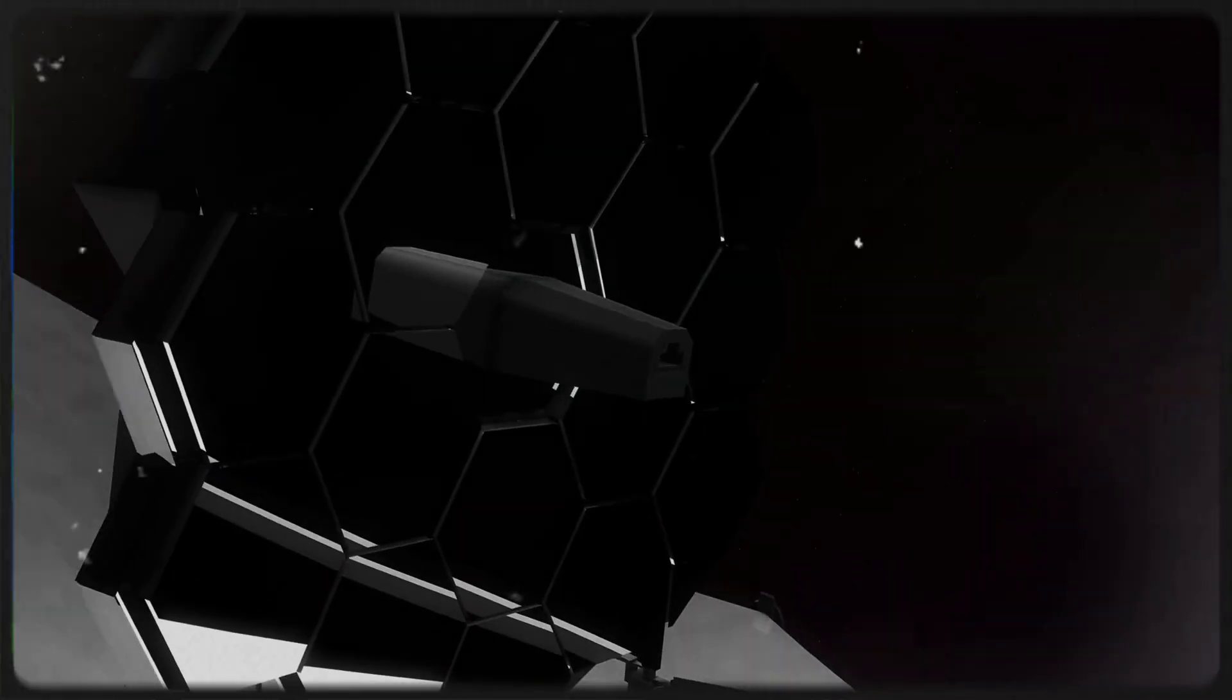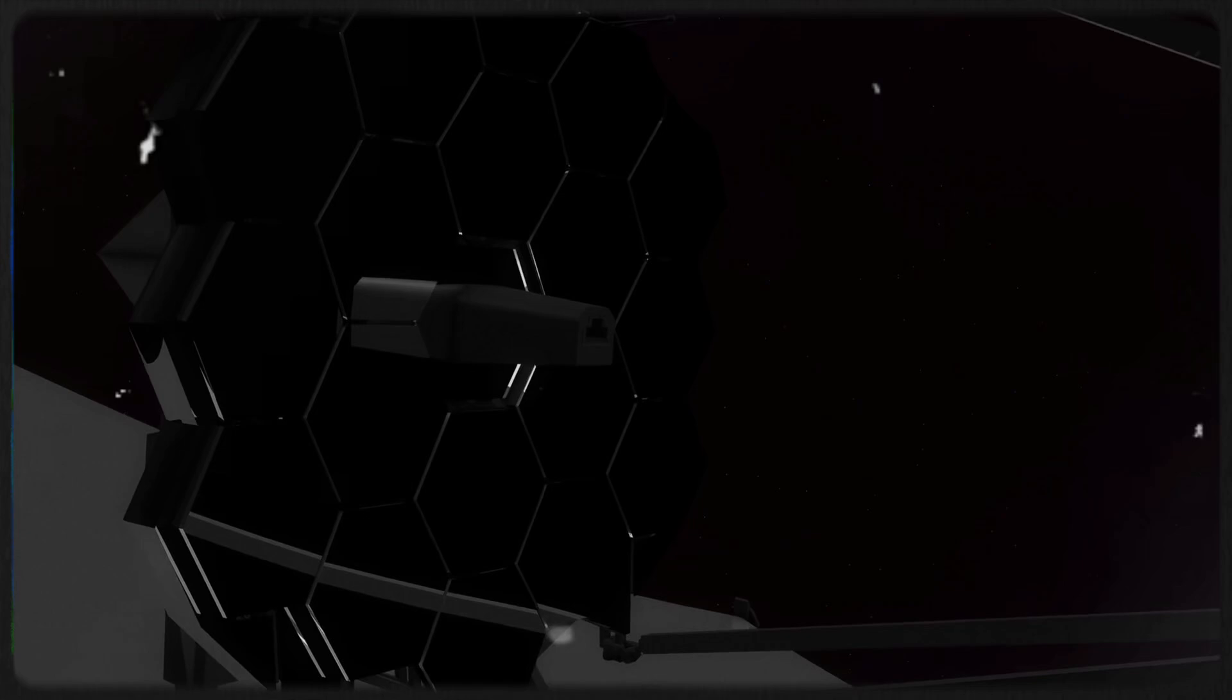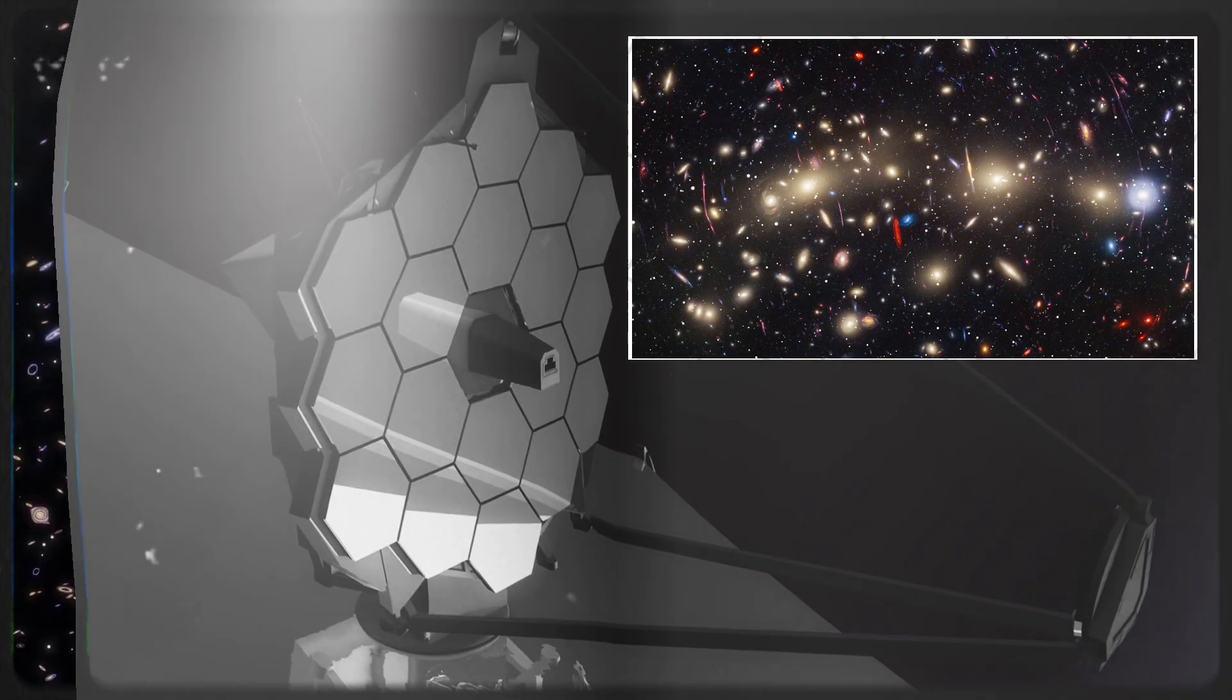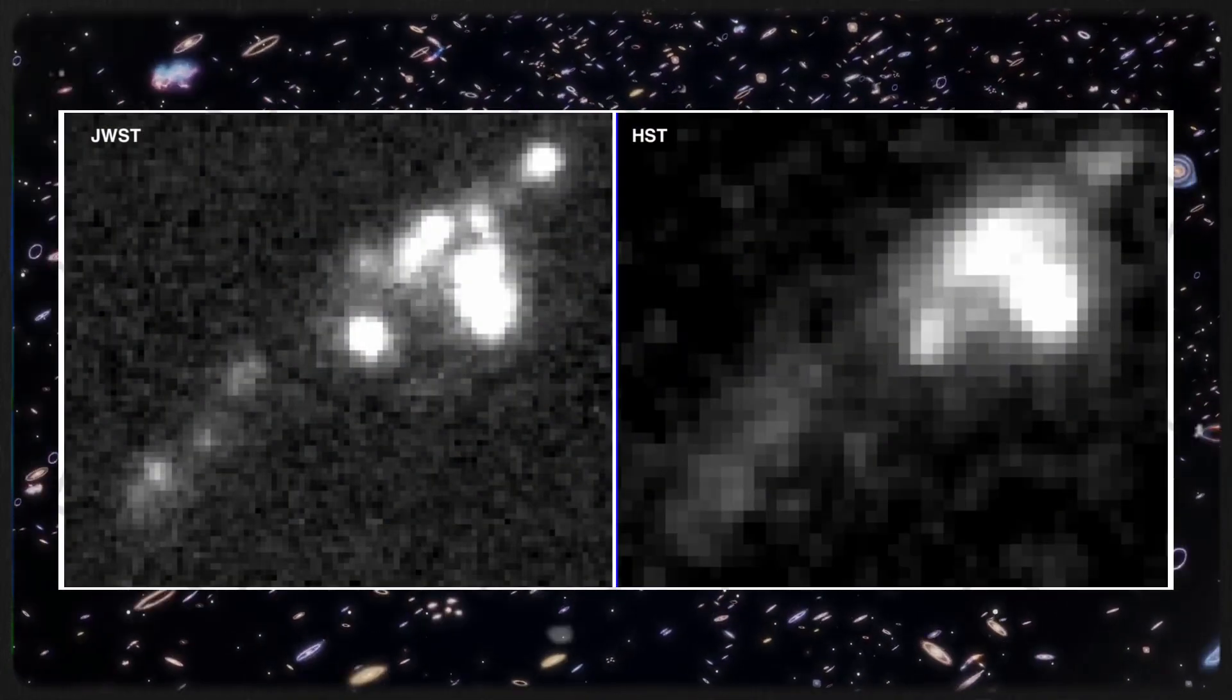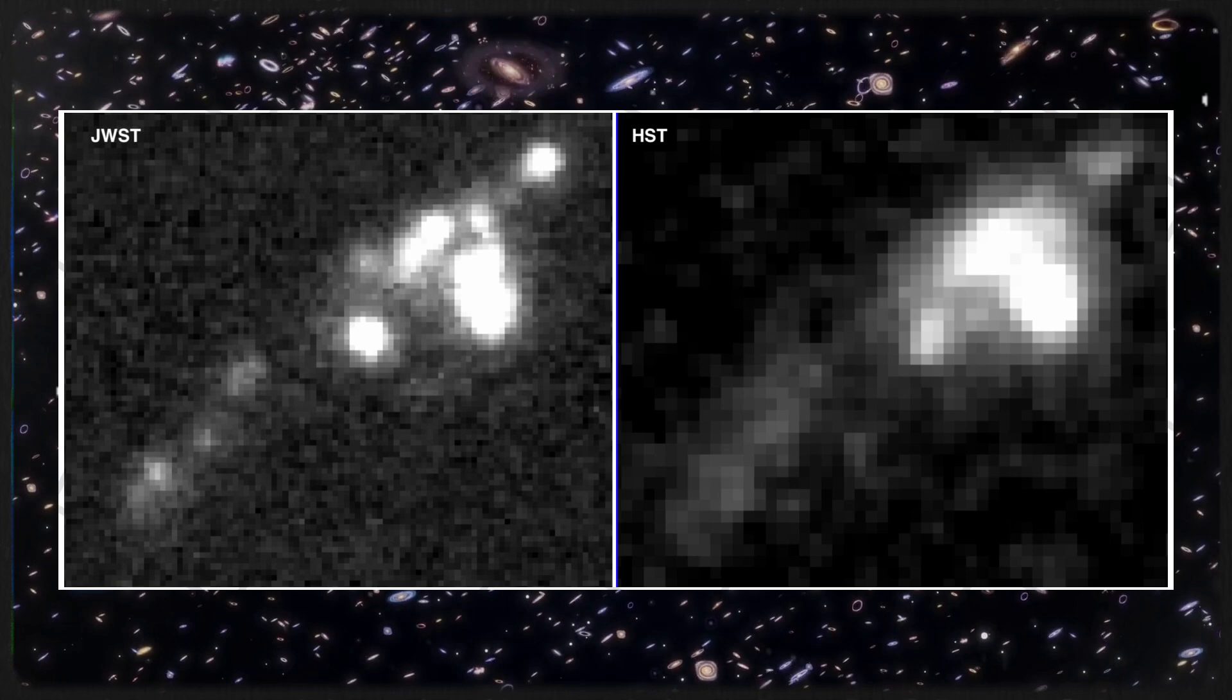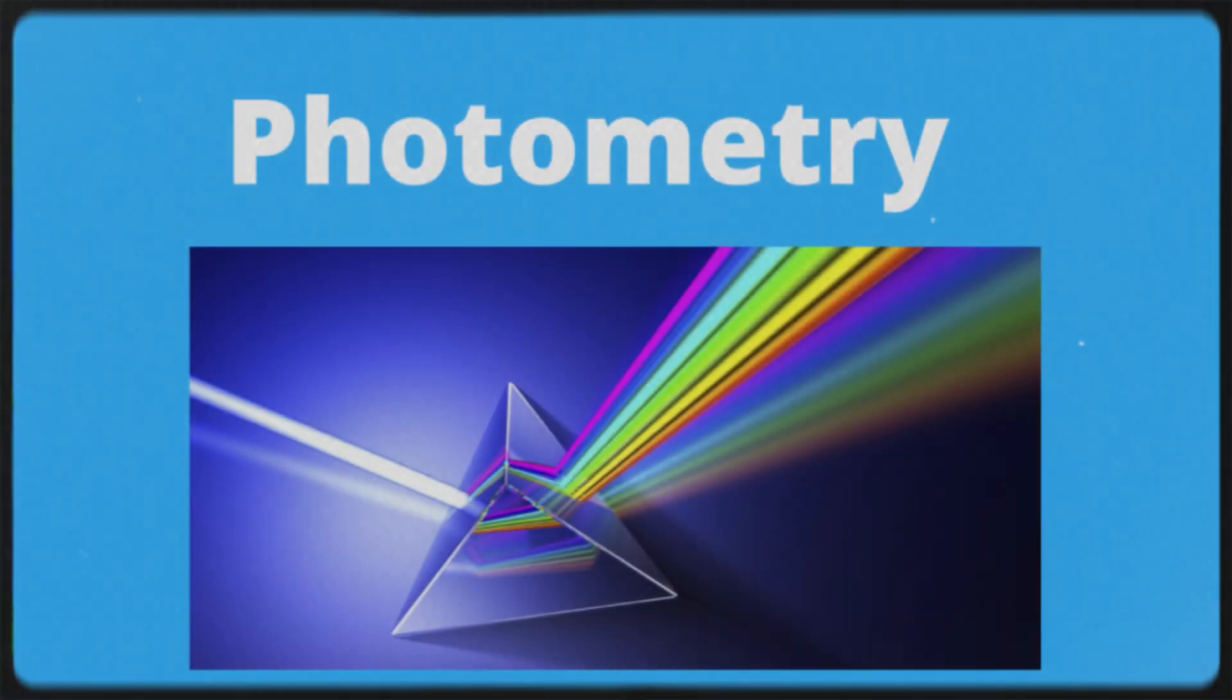To gather this data, astronomers use James Webb's near-infrared camera, which captures images of the sky in different wavelengths of light. By comparing the galaxy's brightness through various filters, they can determine its distance, temperature, and composition. This method, known as photometry, is a key technique for studying galaxies.